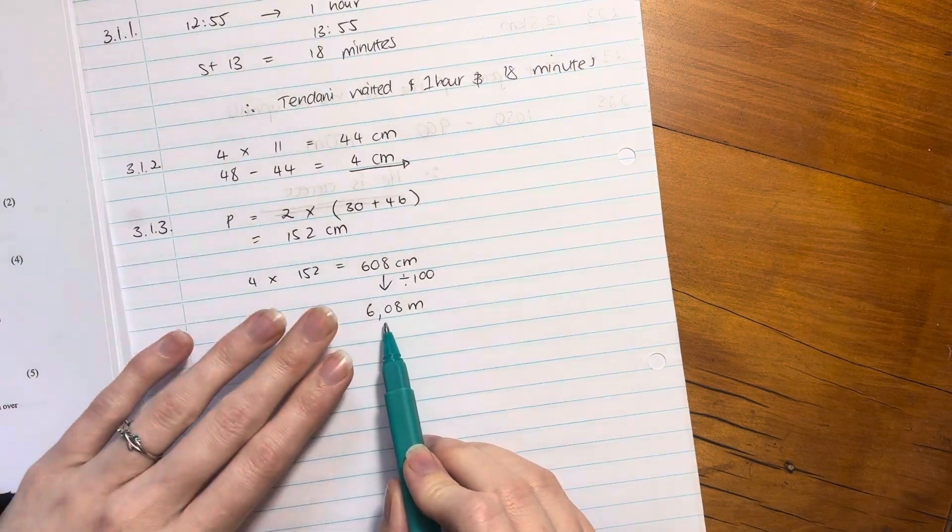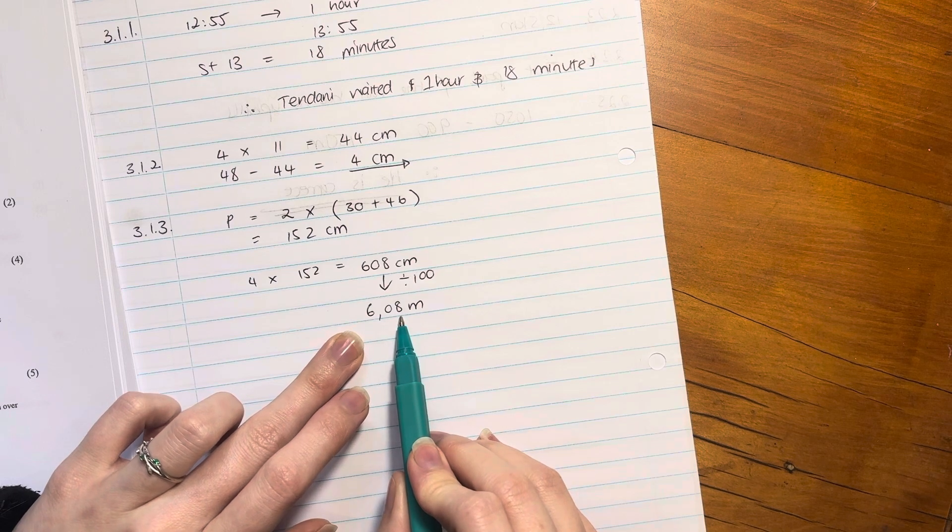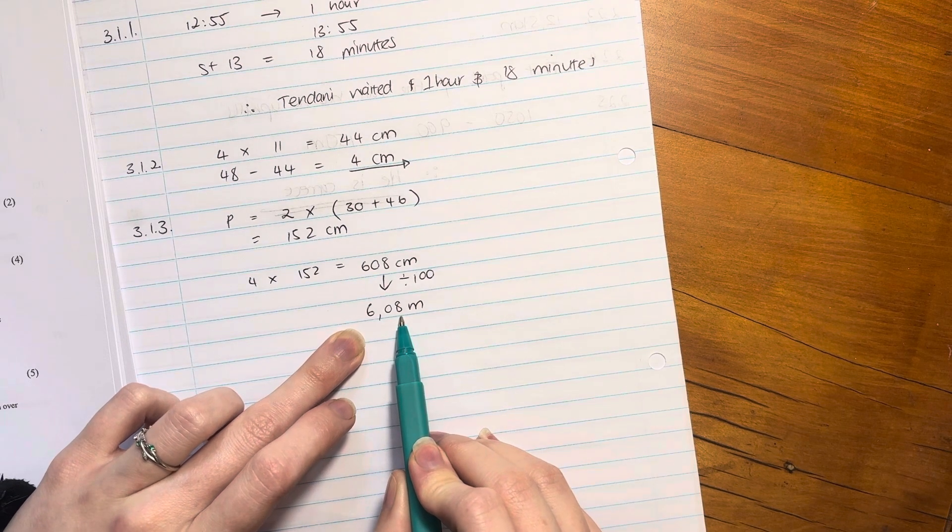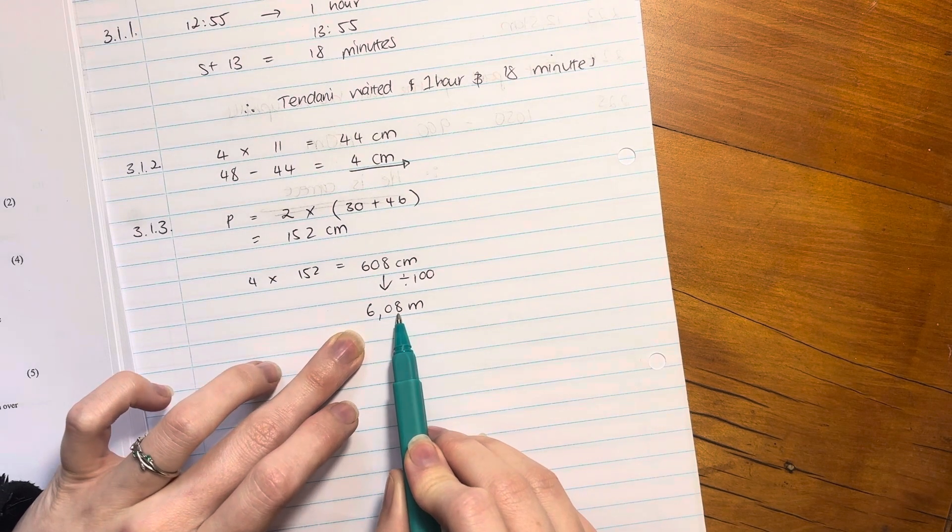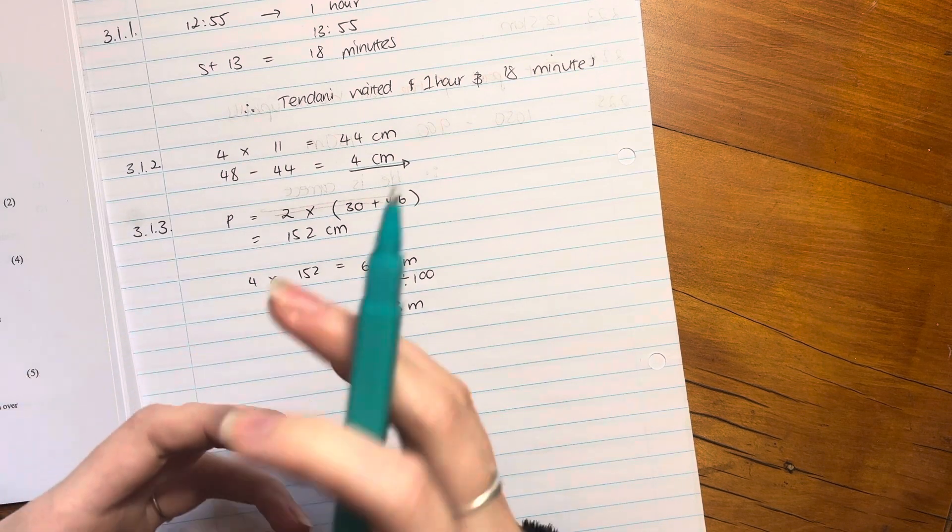So she could buy six meters worth. But then she's going to be a little bit short, right? So unfortunately, she's going to have to buy six and a half meters to ensure she has enough. And she'll have to keep the little extra for next time, right? So that's an element of interpretation.